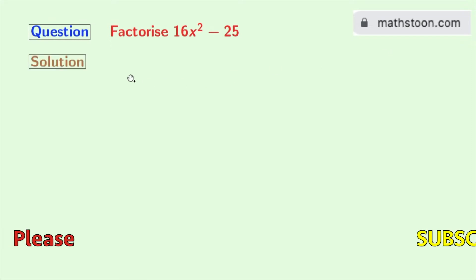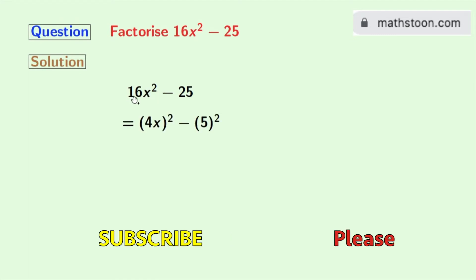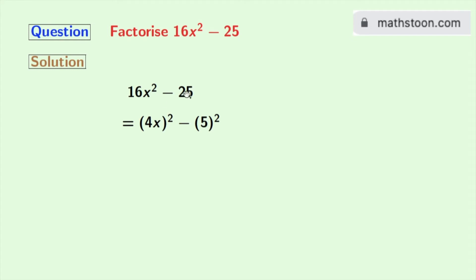This is our given expression. Now to solve this expression, we will express each of these terms as a square of something. To do that, we will express 16x² as (4x)² and 25 as 5².